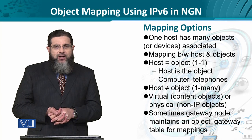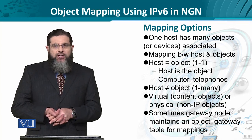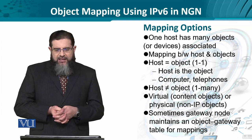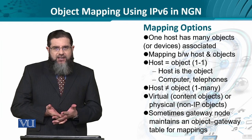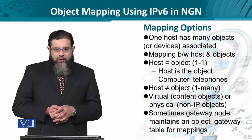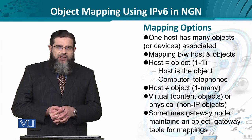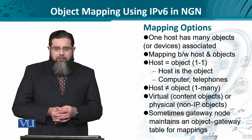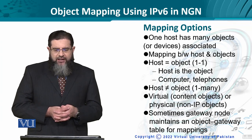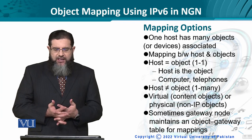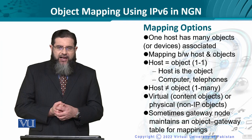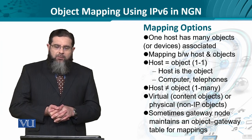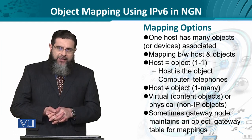One host could have many objects, so we need to have mapping between host and object. In this case, the host is not the object, but the host has many objects. We need to provide the virtual and physical content-based objects with their own identifiers. For that, we need the object mapping that we've just discussed. Sometimes, a gateway node maintains an object gateway table for mappings — a dedicated entity that keeps track of all the objects which reside or are contained within a host.